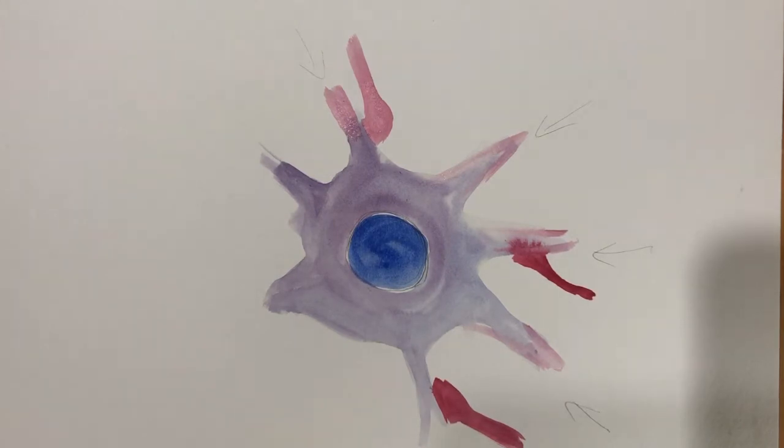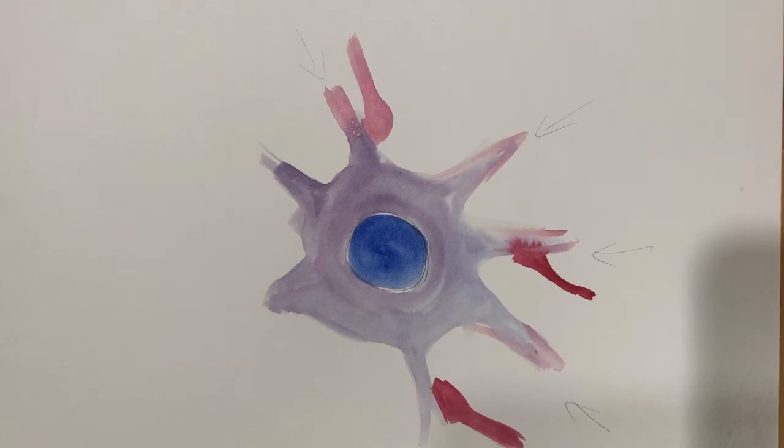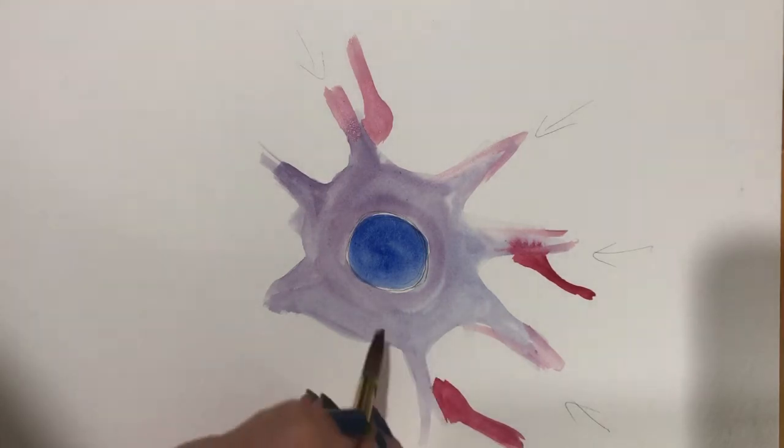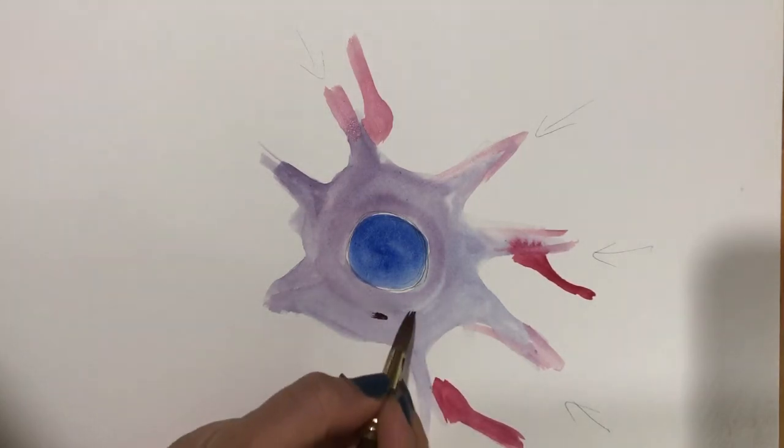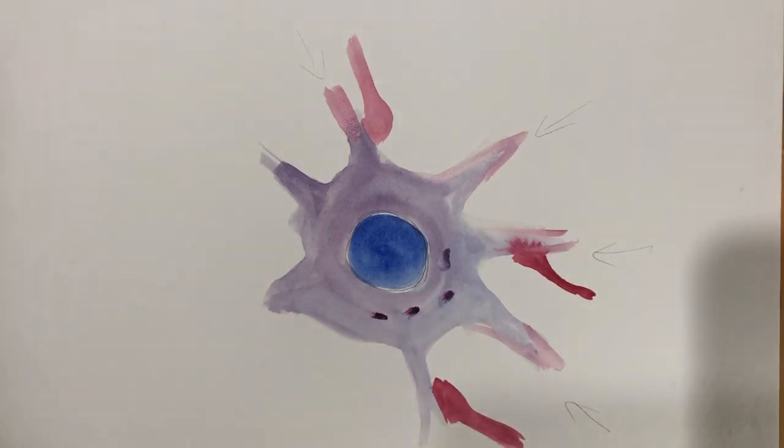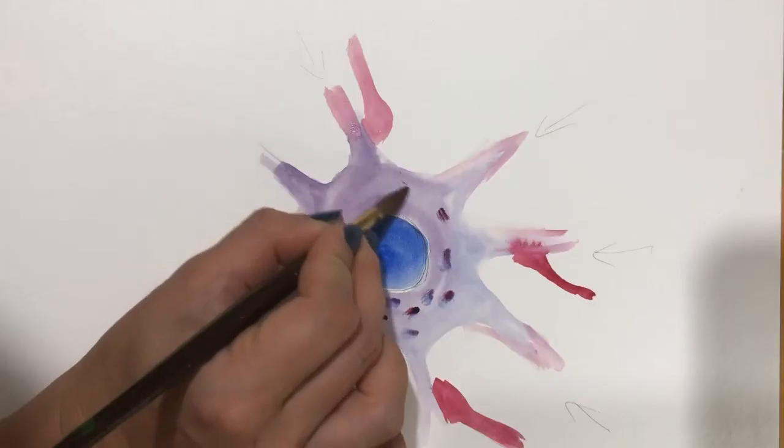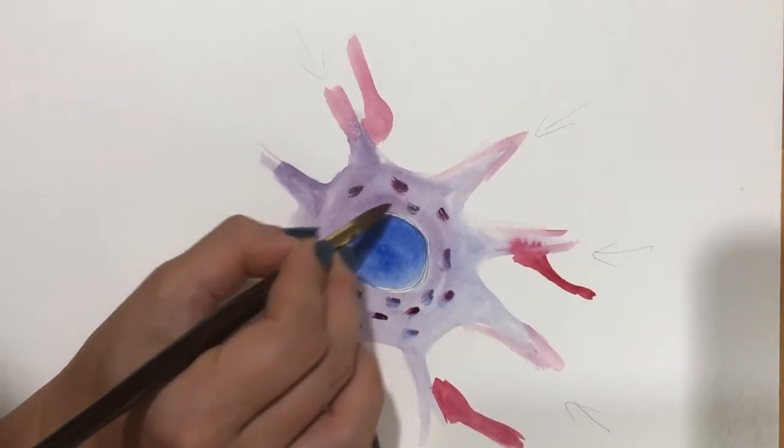Now an interesting feature that we see in our neurons is they have what are called Nissl bodies, which are small granules of protein located all throughout the cell body. So we'll just draw a couple in. We see these granules on our lab models as well. Let's draw those all in.